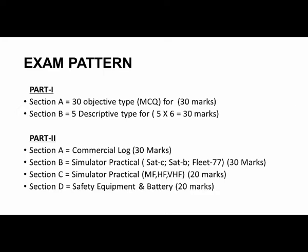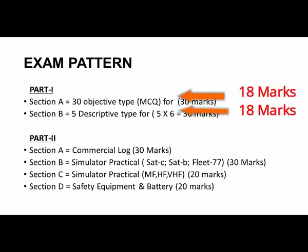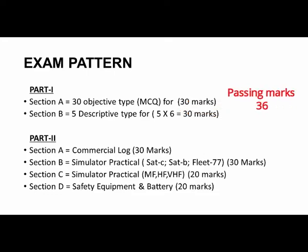For the passing percentage in Part one: you must score 18 marks in your objectives out of 30, as well as 18 marks in the descriptive section. So the total passing mark is 36 out of 60. You have to score 18 and 18 individually in both sections.